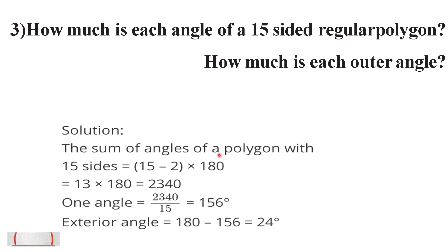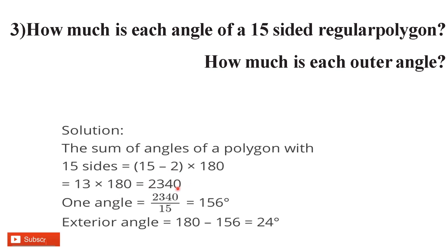The exterior angle of the 15-sided regular polygon is found as 180 − 156 = 24 degrees. Alternatively, the exterior angle equals 360 ÷ 15 = 24 degrees. So the exterior angle is 24 degrees.